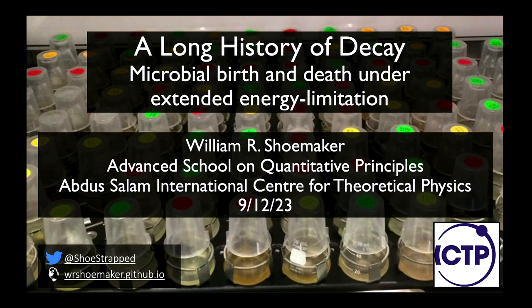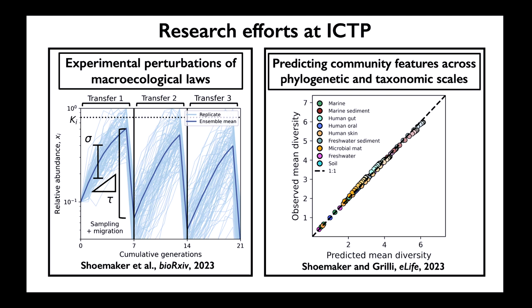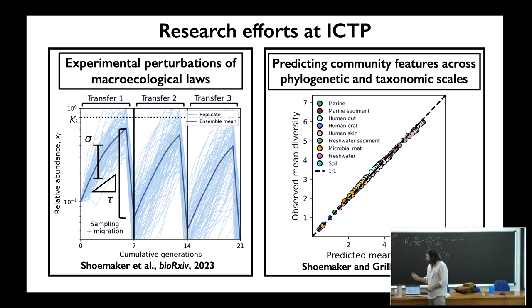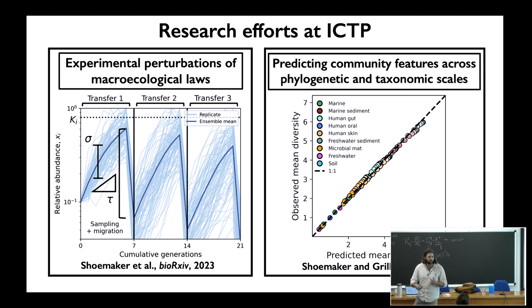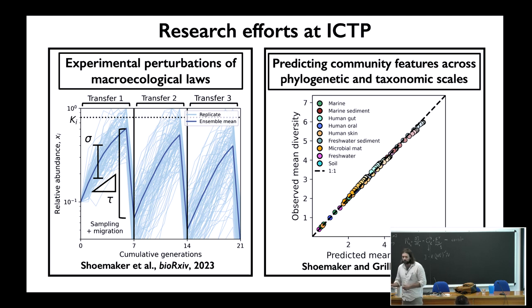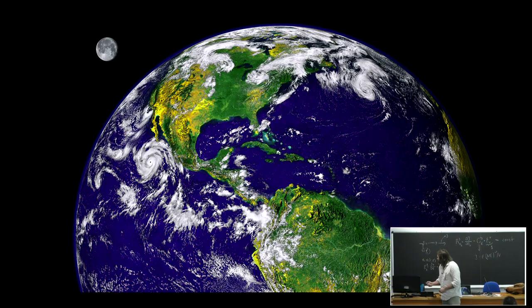Just briefly before getting into it, the work I've been doing here at ICTP with Jacopo has been primarily focused on community dynamics. A preprint recently out is a collaborative effort with Alvaro Sanchez on determining the extent that macroecological laws you get in nature can be reproduced in single carbon source communities, and on the right is work demonstrating similarity in the macroecology of microbial communities across phylogenetic and taxonomic scales, out recently in eLife.